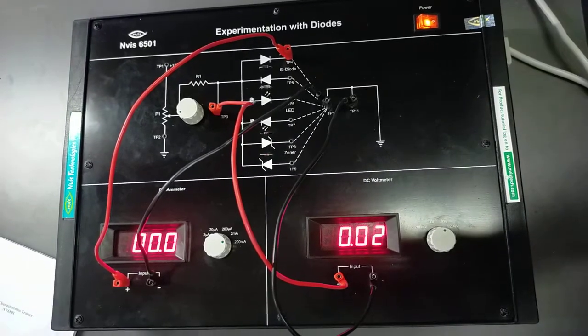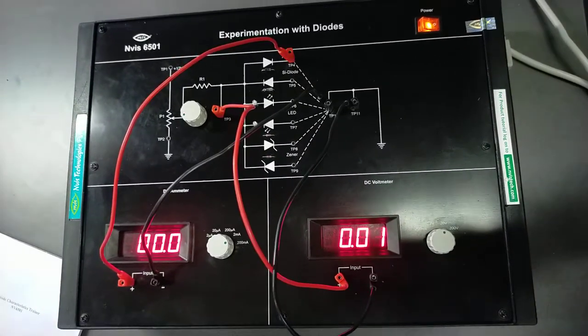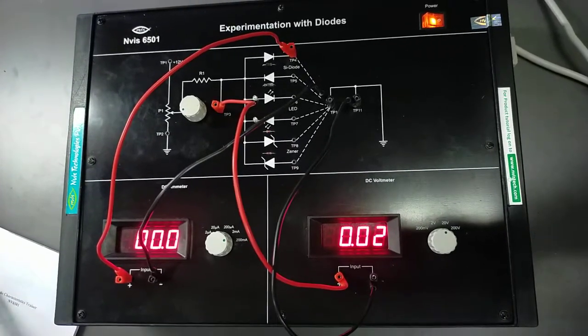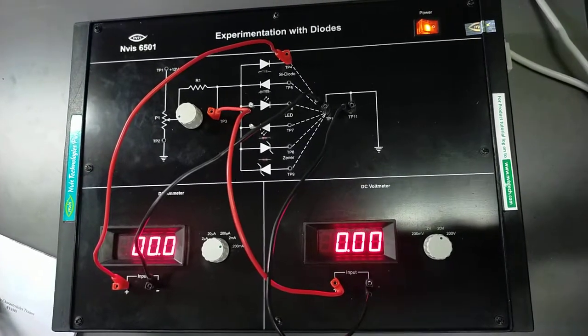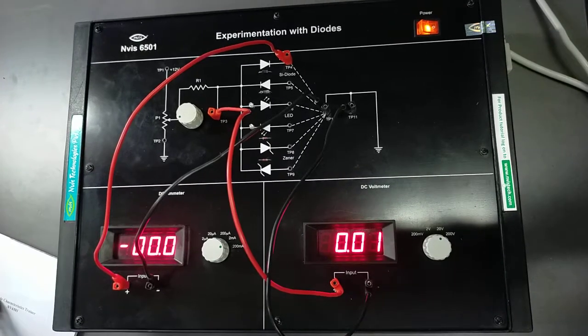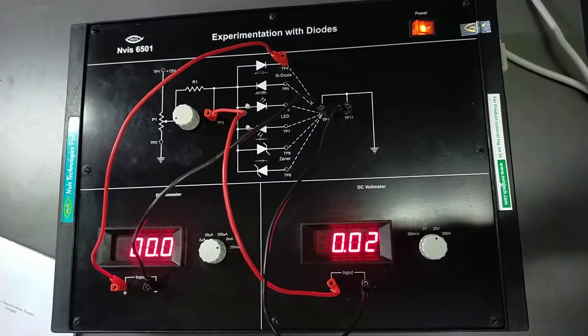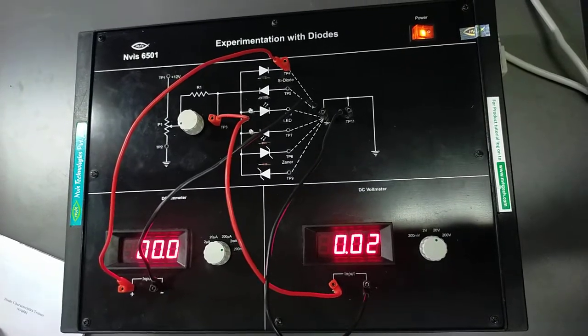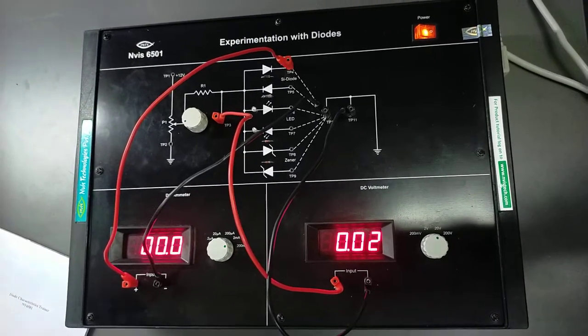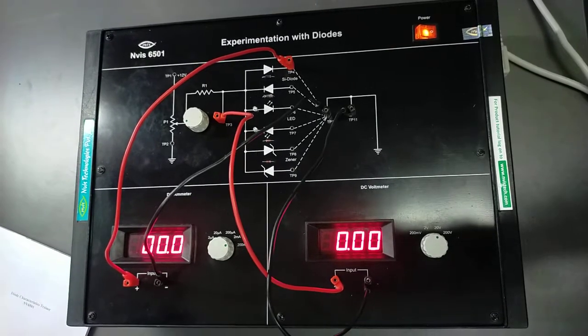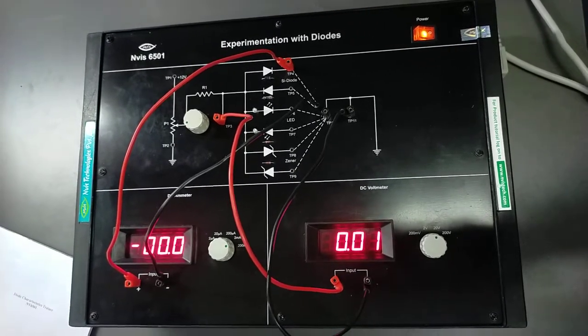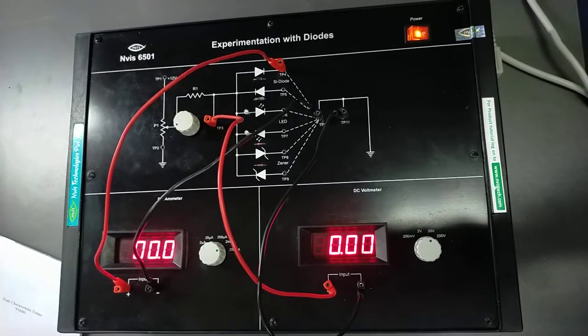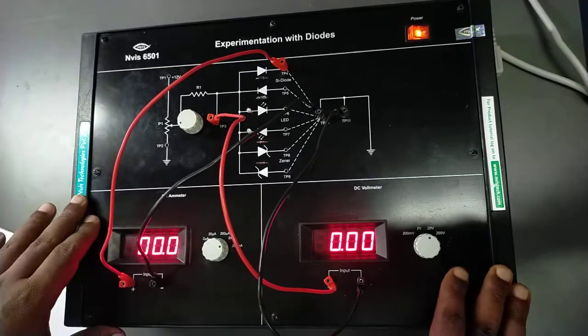Hello everyone, we are here to do the experiment of experimentation with diodes. Today we will do the experiment of silicon diode and we will see its forward and reverse bias characteristics. So let's start.